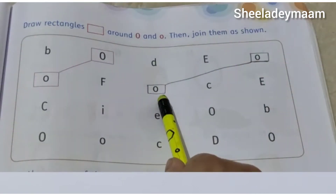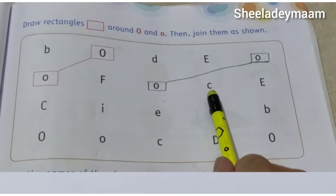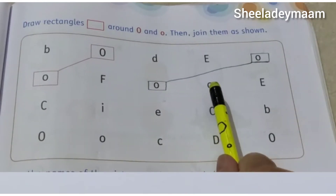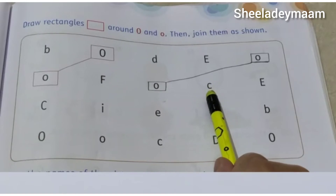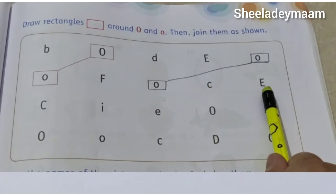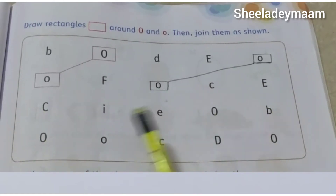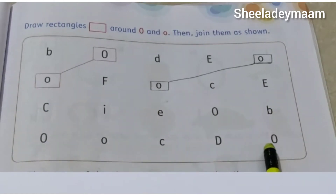And our next letter is — tell me, children, which letter is this? This is letter C, this is lowercase c. And this is letter E, this is capital letter E. So children, rest — do it by yourself. Okay?